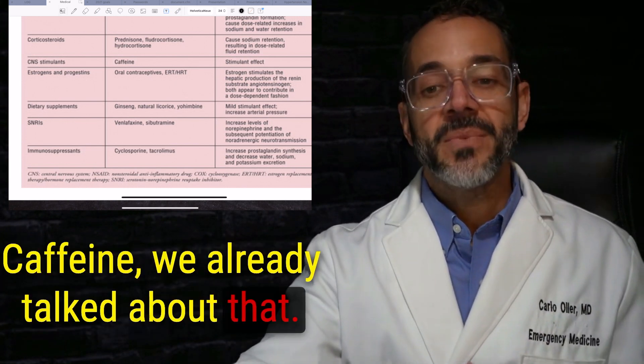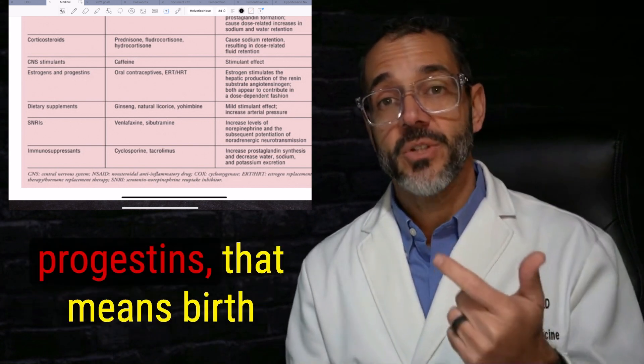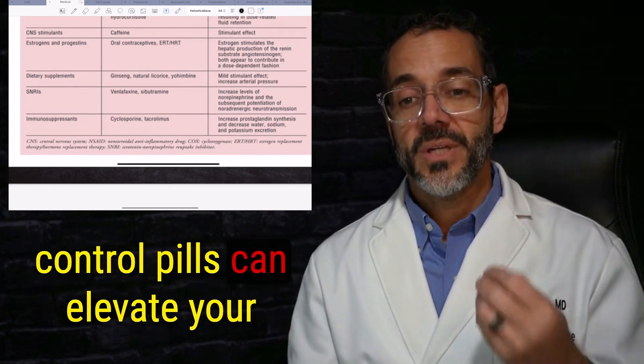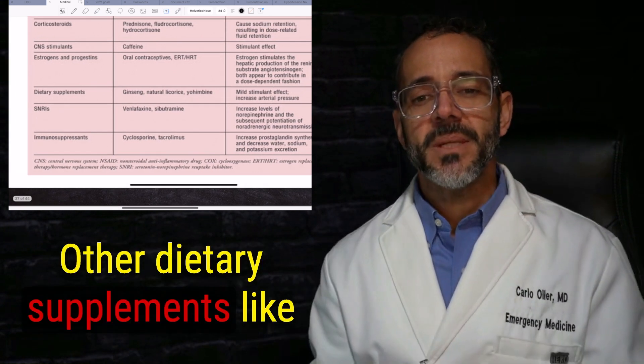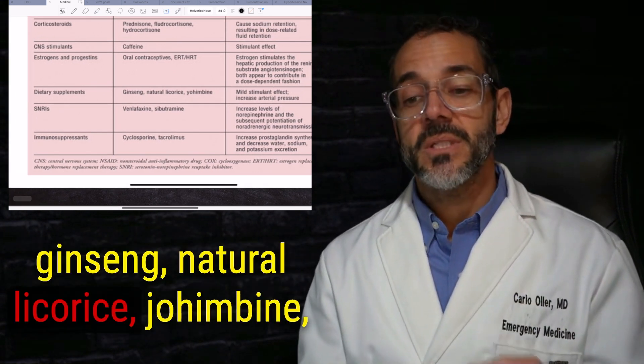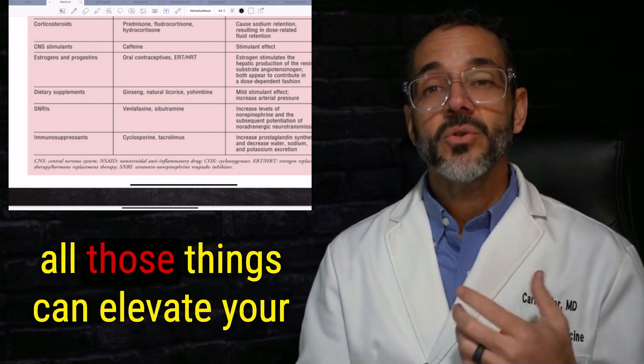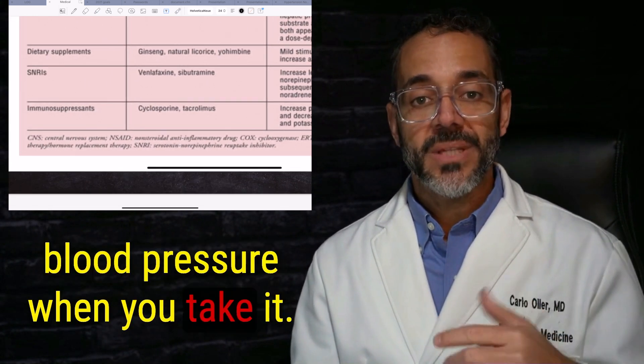Caffeine, we already talked about that. And hormones, estrogen, progestins, that means birth control pills can elevate your blood pressure. Other dietary supplements, like ginseng, natural licorice, yohimbine, all those things can elevate your blood pressure when you take it.